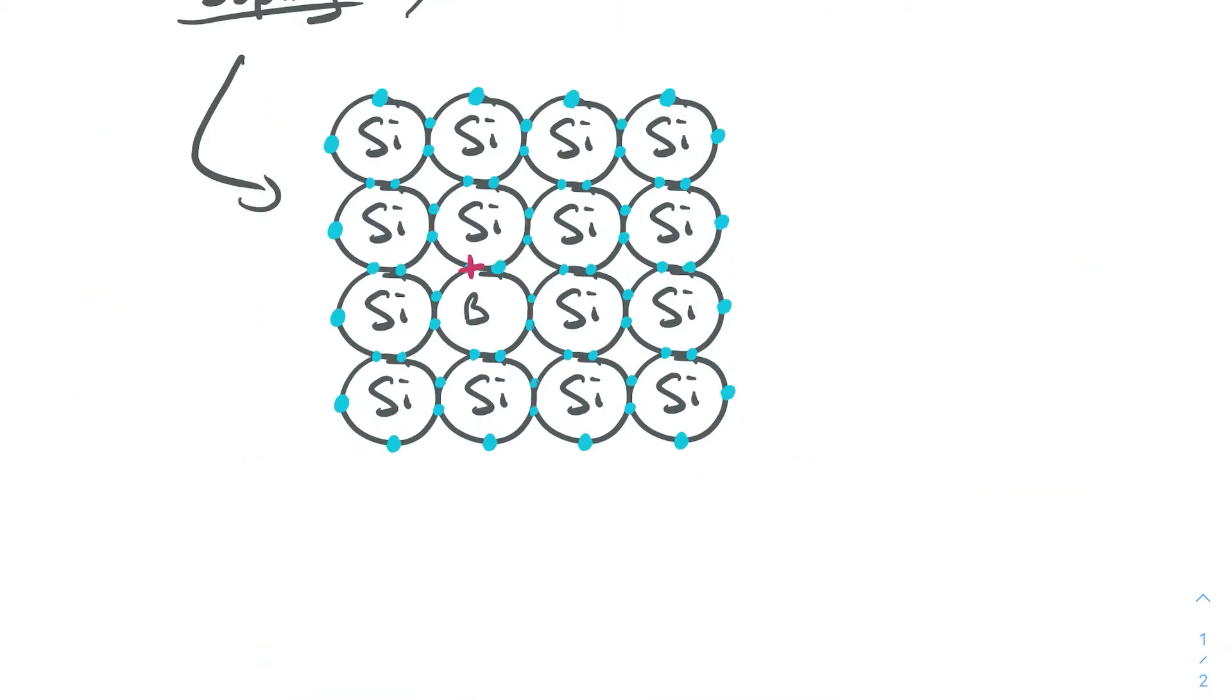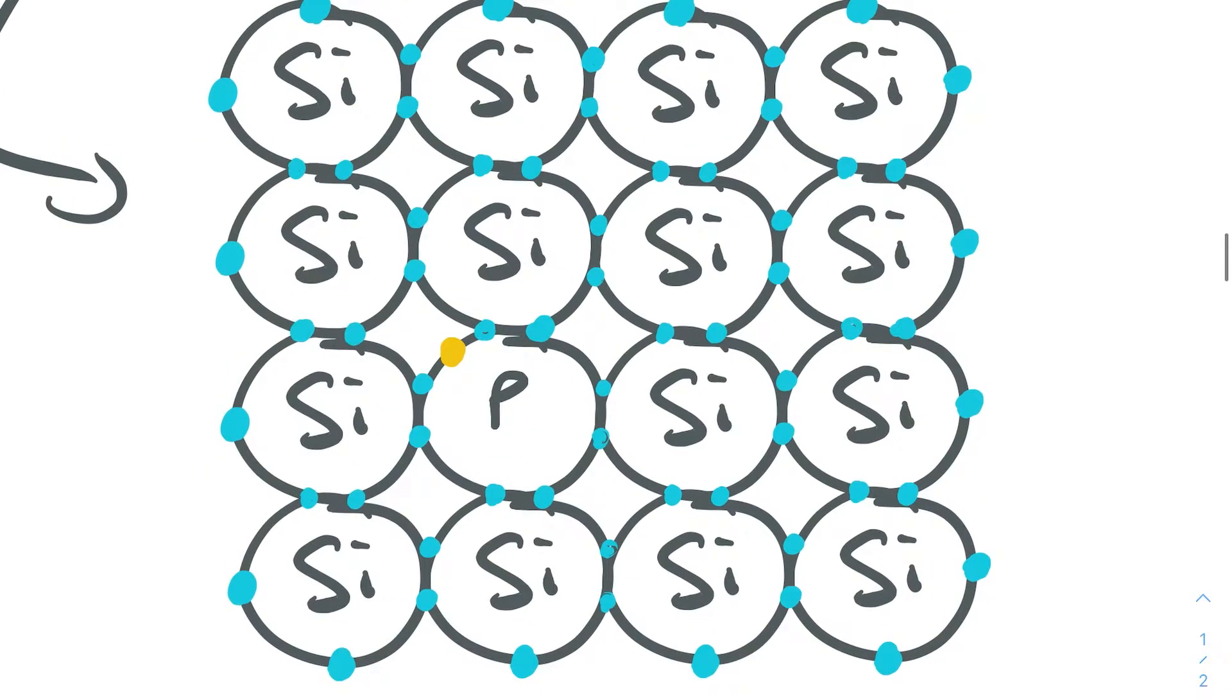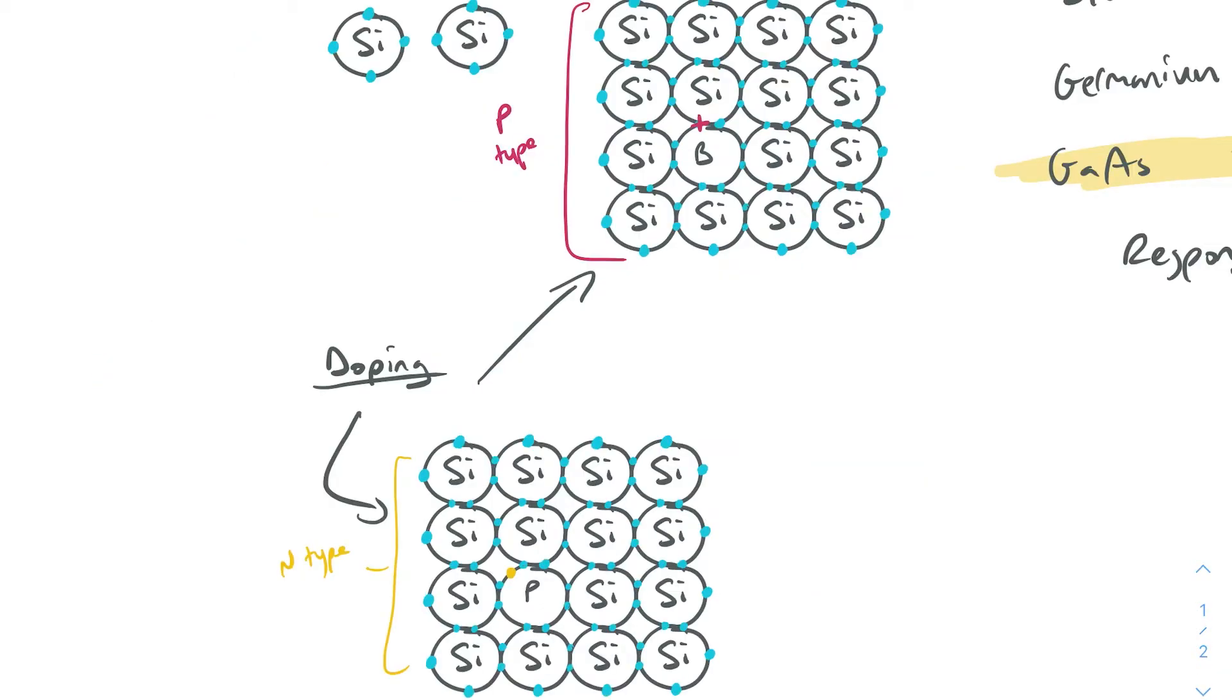If we take that same silicon structure, but in this time, instead of using boron, if we use something like phosphorus, the phosphorus actually has five valence electrons. What that means is you actually end up with a spare electron, which we see in here, which isn't bonded to anything. This is called a free electron. So you do this to the crystal and you end up with an N-type.